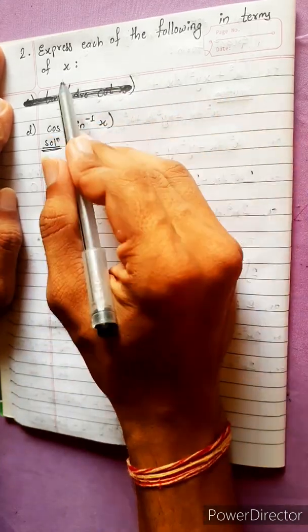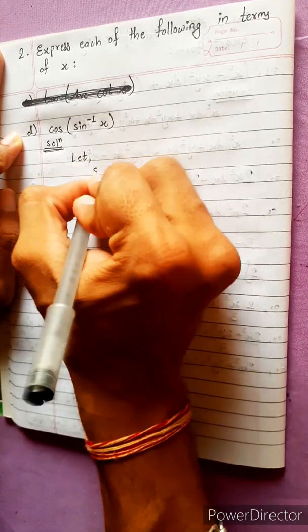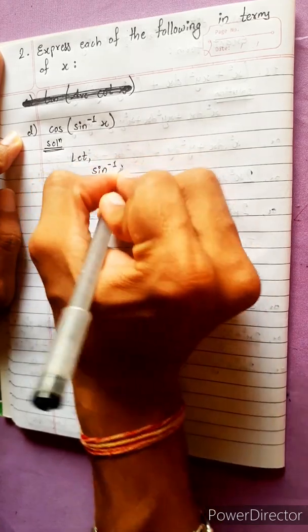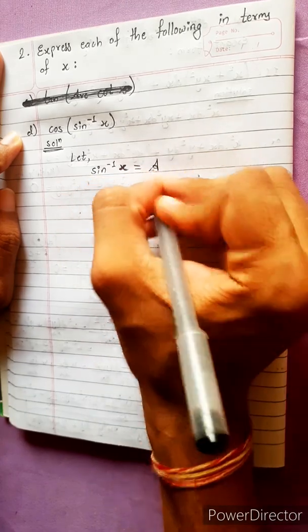Question is telling, express each of the following in terms of x. Okay, let's do it. Let sin inverse x equals to something, some variable we should let. Like, suppose A.